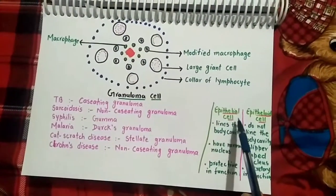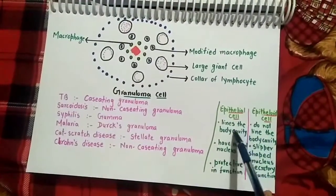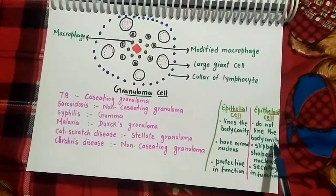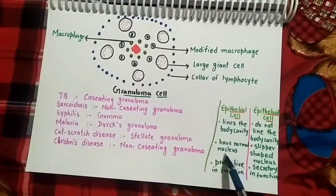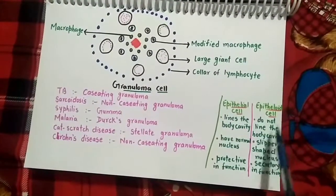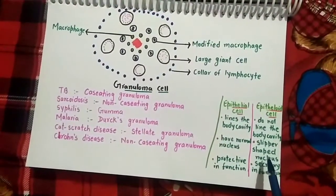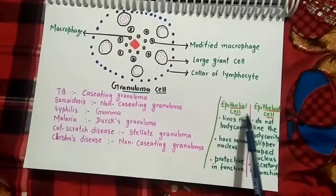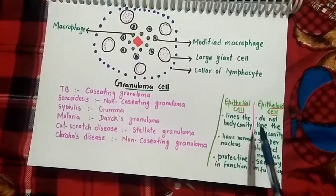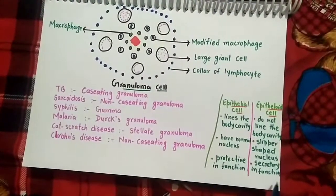The difference between epithelial cells and epithelioid cells: epithelial cells line the body cavity while epithelioid cells do not. Epithelial cells have a normal nucleus, while epithelioid cells have a slipper-shaped nucleus which helps in granuloma formation. Epithelial cells are protective in function while epithelioid cells are secretory in function.